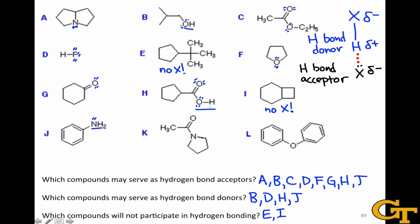Molecule K includes two heteroatoms — an oxygen and a nitrogen. However, neither of these is bonded to a hydrogen atom, and so while molecule K can act as a hydrogen bond acceptor, it cannot act as a hydrogen bond donor. Finally, molecule L includes a central oxygen atom with two lone pairs, but that oxygen is bonded to two phenyl rings and includes no bonds to hydrogen, and so molecule L can act as a hydrogen bond acceptor, but not a hydrogen bond donor.